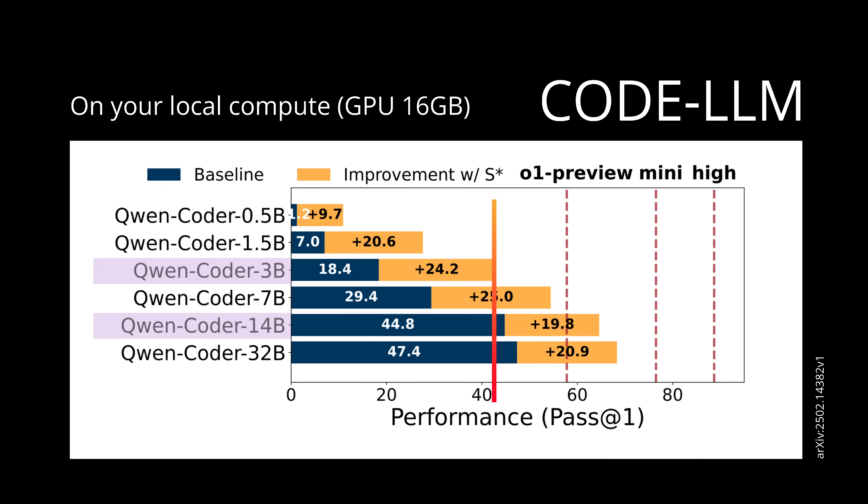If we have a particular S-Star methodology, you can jump up to the normal performance of a coder with 14 billion free trainable parameters. So from a 3B to a 14B model, you have almost the same performance. This is really something because if you are limited on your local compute, this is the way to get better performance without going to the cloud.